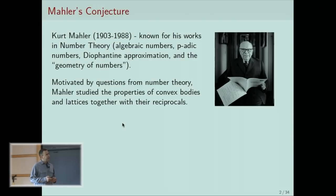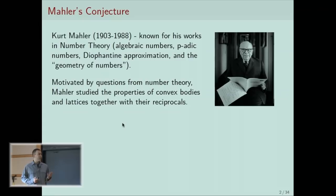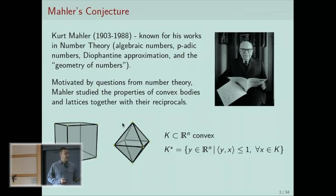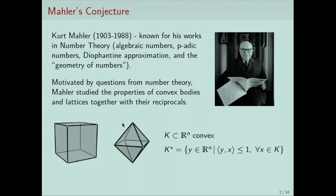Motivated by concrete applications to number theory, Mahler was interested in the relation between the volume of the convex body and the volume of its reciprocal body or its dual body. Here is the definition of a dual body of a given convex set in R^n. More intuitively, if you think about the convex body as the unit ball of a certain normed space — in this picture you see the unit ball of the L-infinity norm — then the dual body would be just the unit ball of the dual space equipped with the dual norm, so the L1 norm.